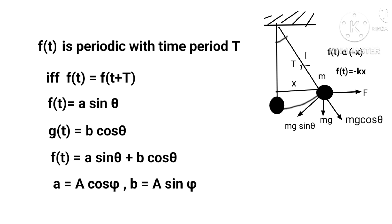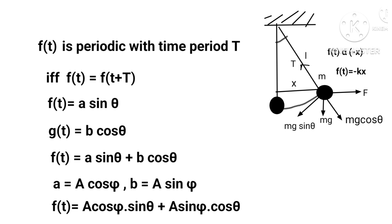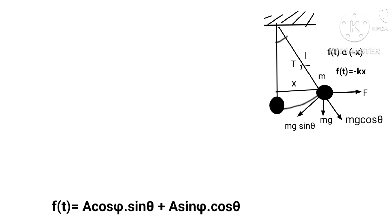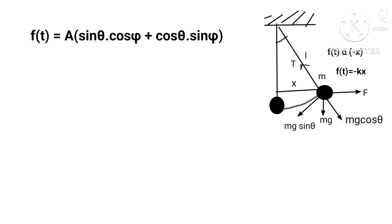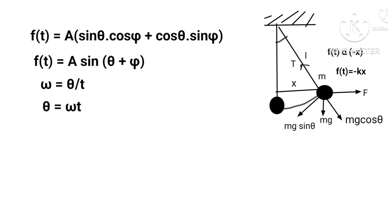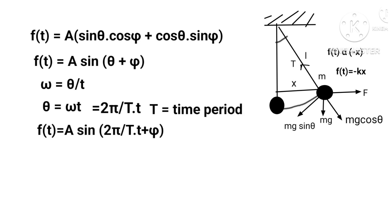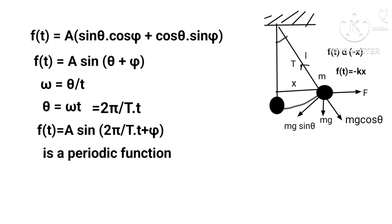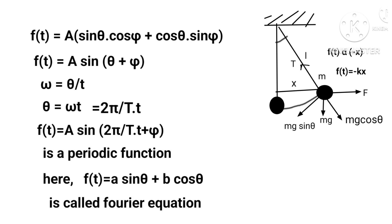Let A equals a cosφ and B equals a sinφ. Therefore, f(t) equals a cosφ sinθ plus a sinφ cosθ, which gives f(t) equals a sin(θ + φ), where ω equals θ/t. Hence θ equals ωt equals 2πt/T, where T is the time period. Thus f(t) equals A sinθ plus B cosθ is called a Fourier equation.